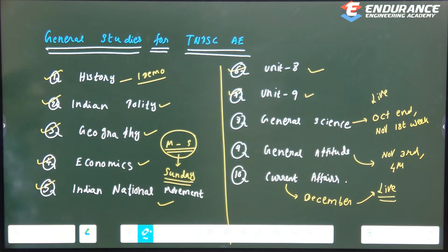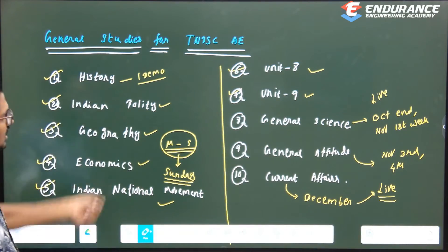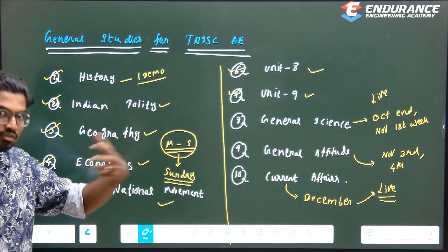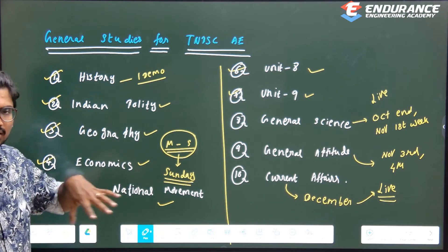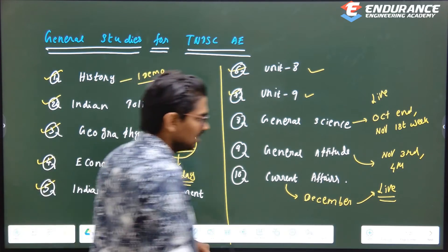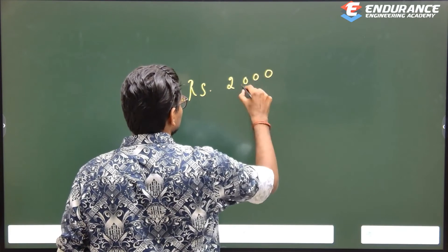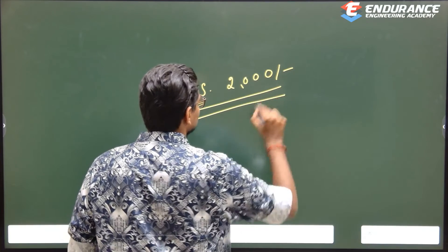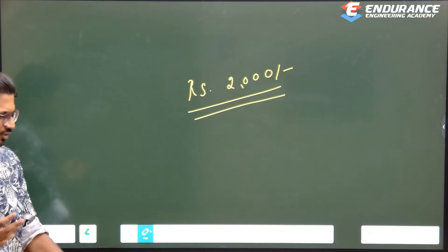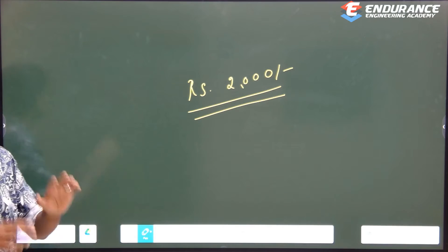To summarize everything: 70% of the syllabus is already recorded and available, and 30% will be live. The course fee is just 2,000 rupees, which is very nominal and affordable. If you are not comfortable with the fee, you can message or call us and we will try our best to help.